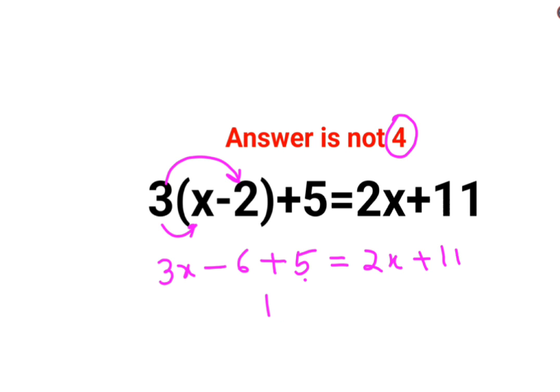But the sign for the answer will be the sign of the bigger number. Out of 6 and 5, 6 is the bigger number and the sign carried with 6 is negative. So we will have minus 1 and we will keep the rest as it is equals to 2x plus 11.